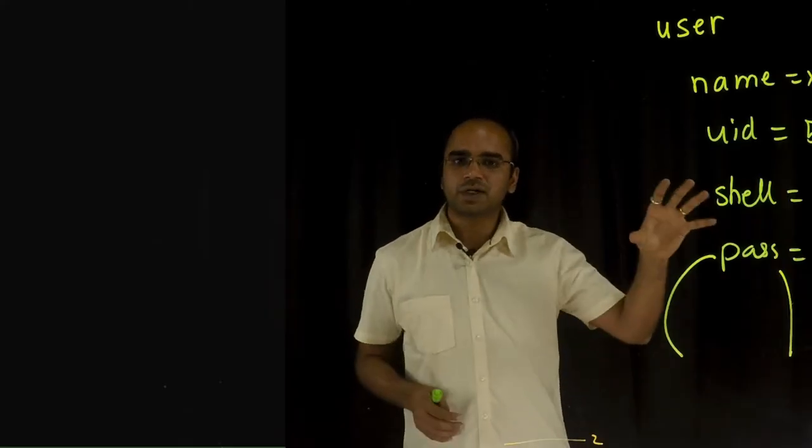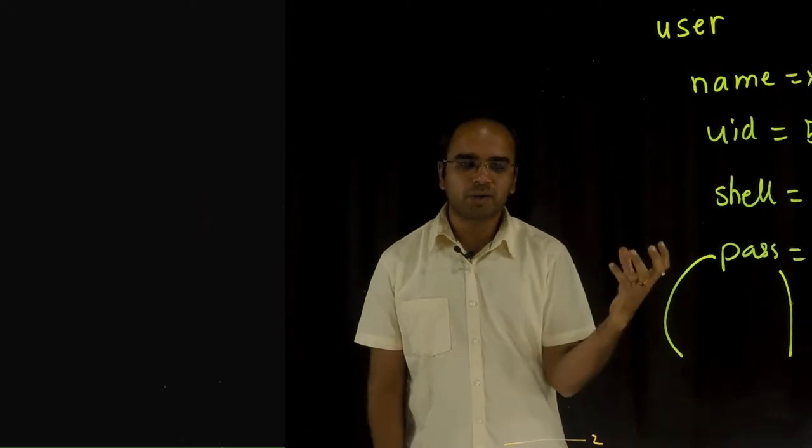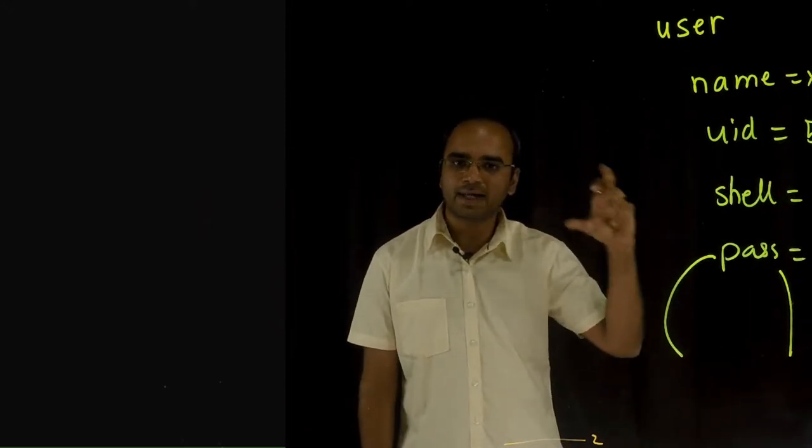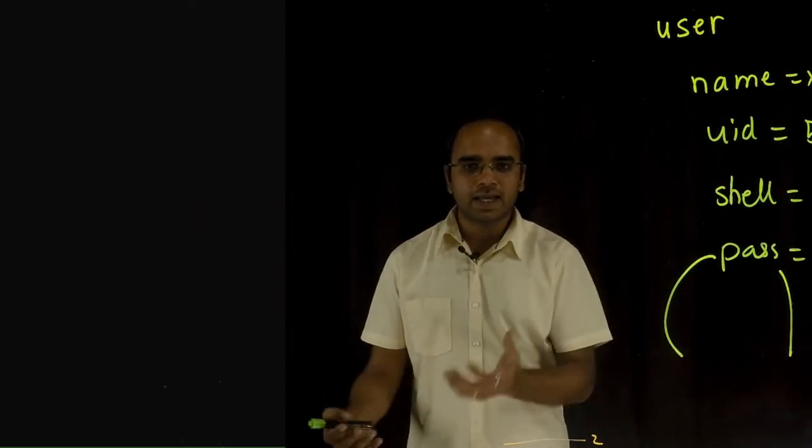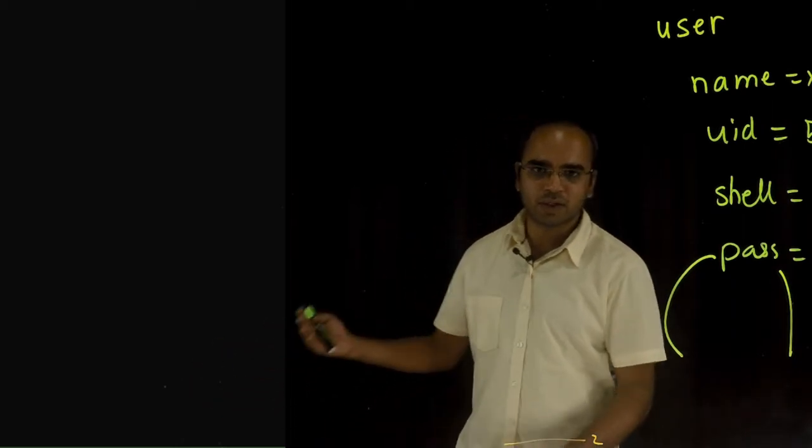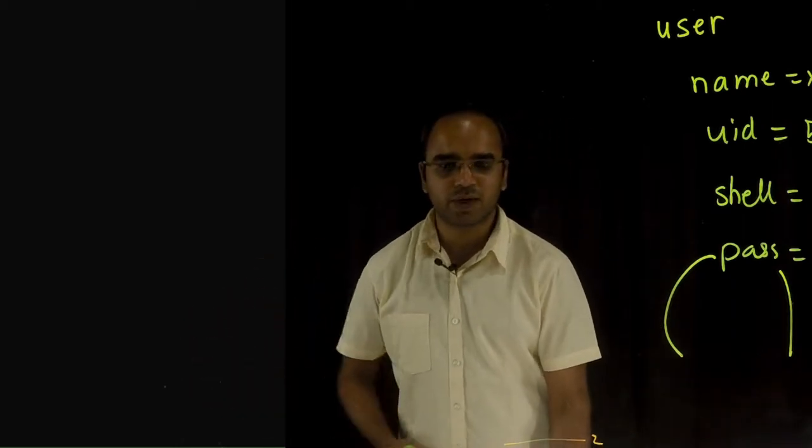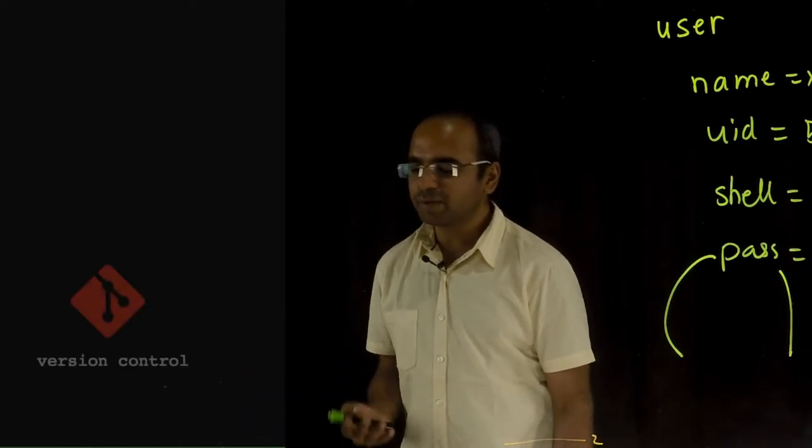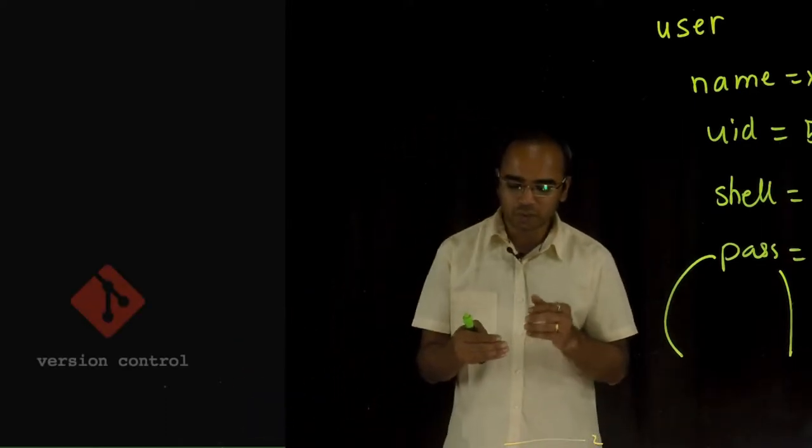The ability to write infrastructure as code is extremely important because once you start defining it as code, you can treat it just like any other code, including your application code. You can start revision controlling it. That's a big thing because once you start revision controlling it, you can actually recreate the state of your complete infrastructure out of the code base.